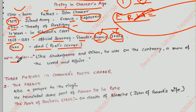W.H. Auden said that like Shakespeare and Milton, Chaucer was, on the contrary, a man of the world and affairs. This means that Shakespeare and Milton were a little different, but Chaucer lived in the world and affairs — not removed from it. As you can see, he served in the army and lived through three kings.